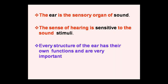Hearing consists of two components. The first is identification of sound — what the sound is. The second is localization of sound — where the sound is coming from. These are the two processes involved in hearing.